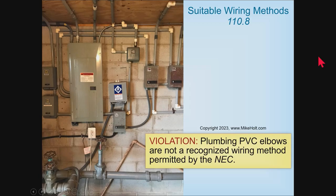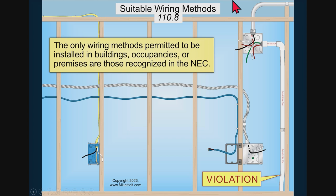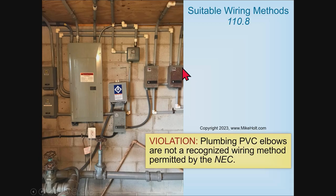Because of examples like this, it would probably be a great graphic to have in the book. If the rule says only wiring methods recognized by the code can be installed in buildings, occupancies, or premises, clearly these fittings are not recognized. It might be electrical piping, but the fittings are not recognized. And that's not somebody's house — that's in a commercial building. It's not like some homeowner went to Home Depot and bought some parts; that's on a commercial building.